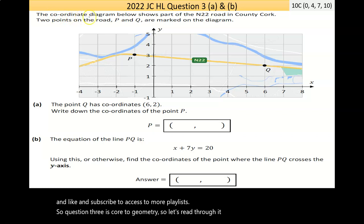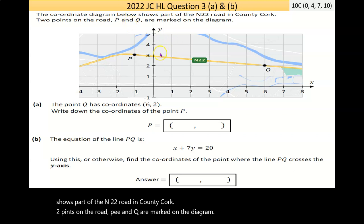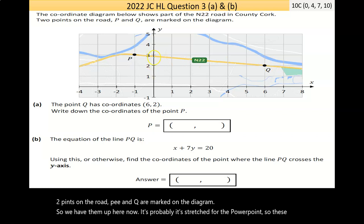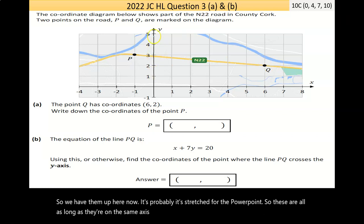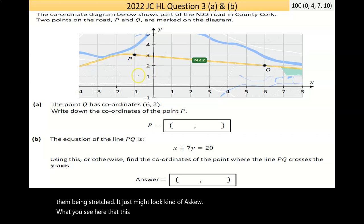The coordinate diagram below shows part of the N22 road in County Cork. Two points on the road, P and Q, are marked on the diagram. We have the map here now. As long as they're on the same axis, the same width apart, there's no problem with them being stretched.